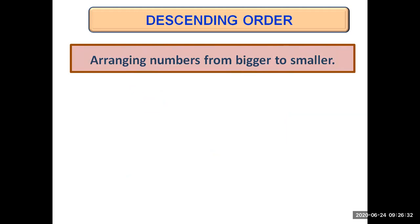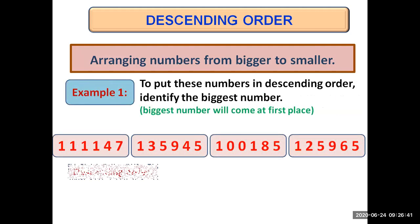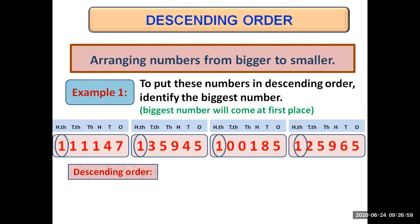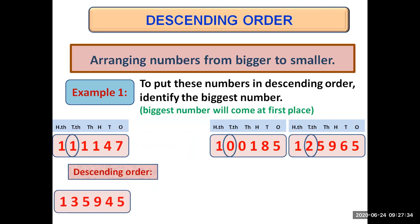Descending order means arranging numbers from bigger to smaller — we identify the biggest number because in descending order, the biggest number comes at first place. We mention the place values and start comparing from 100,000. All numbers have one at 100,000 place, so we move to 10,000 place. The digits there are: one has one, one has three, one has zero, and one has two. Three is the greatest, so that number is the biggest and comes at first place.